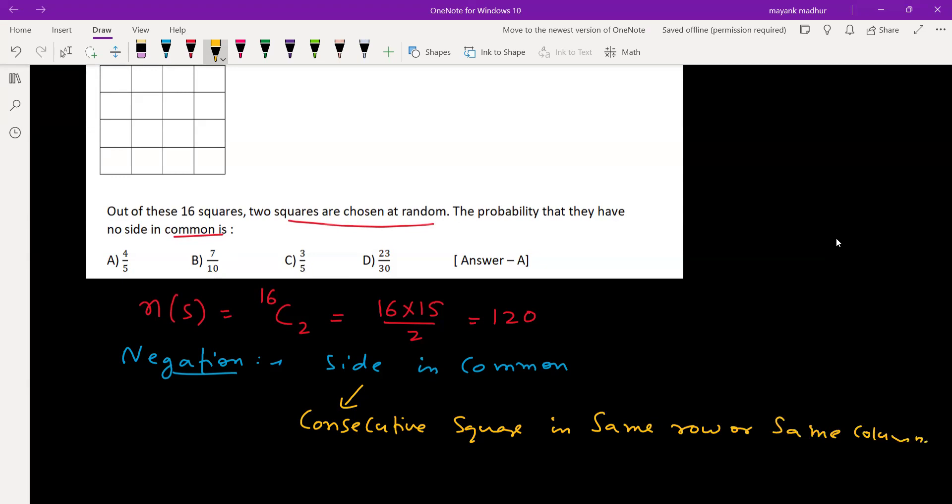For example, if you are going for the first row, which two squares can you select? Either you can select these two squares, first and second, or you can select second and third, or you can select third and fourth. So there are three choices for selecting two consecutive squares.